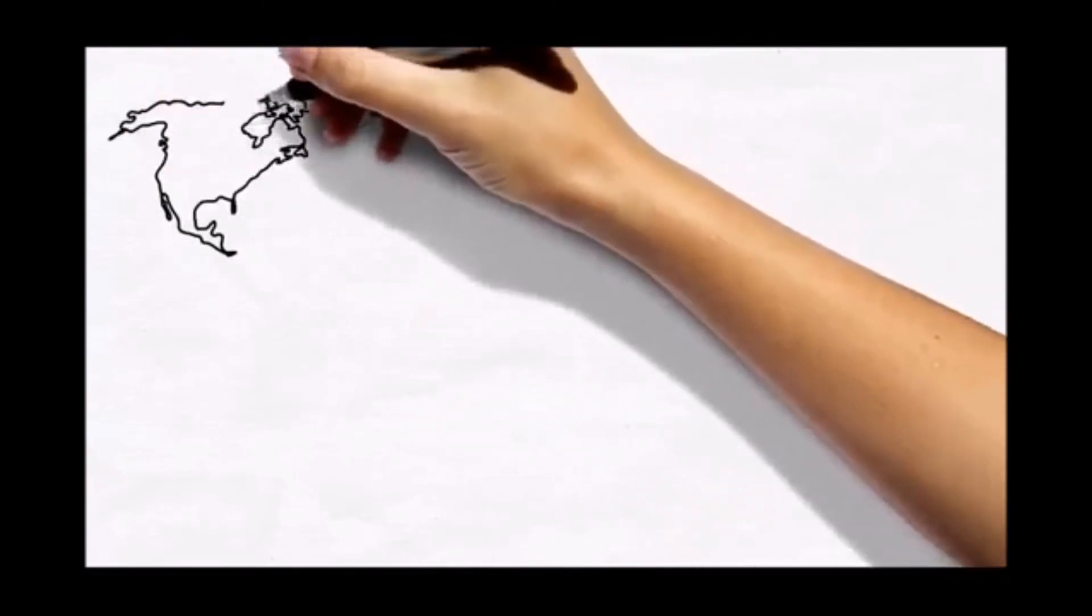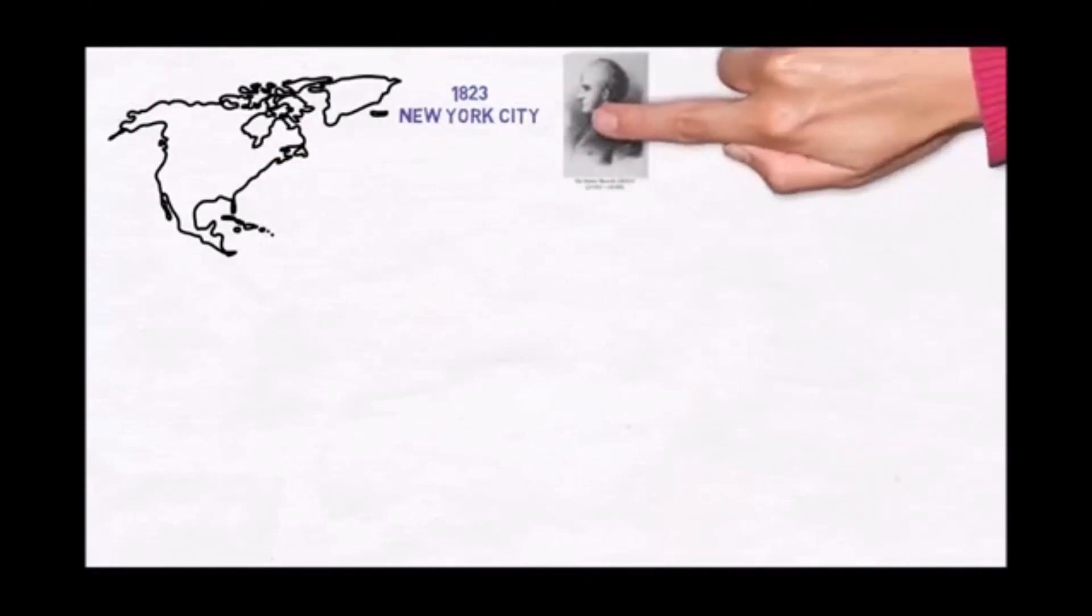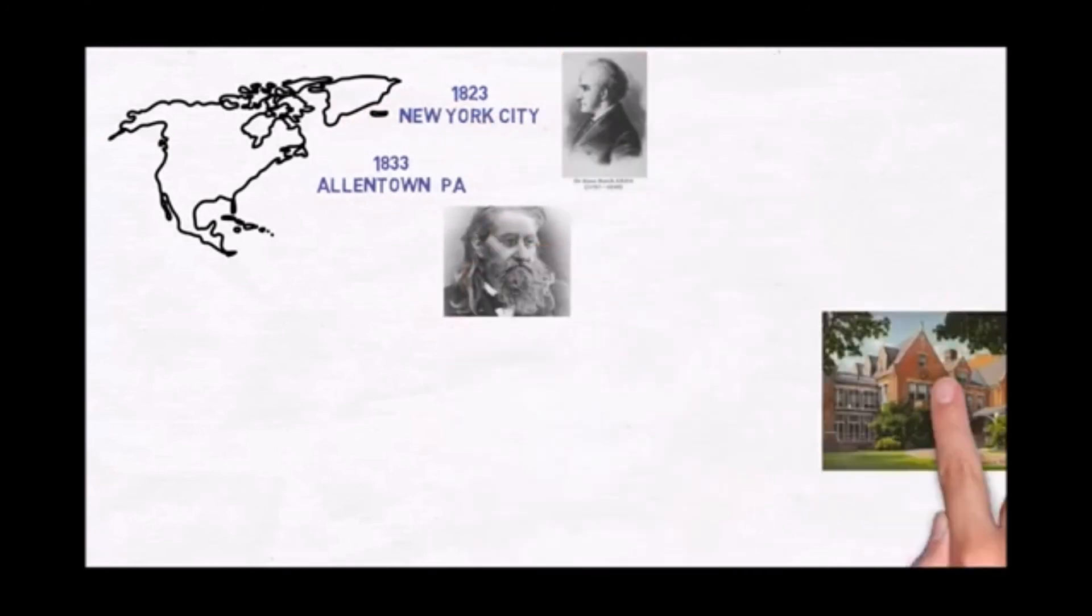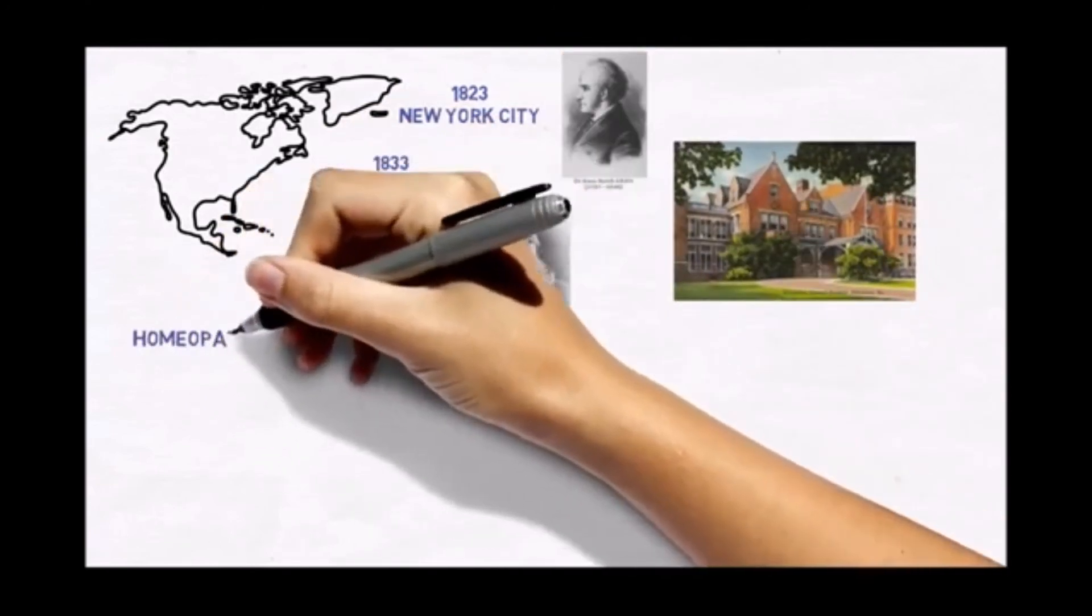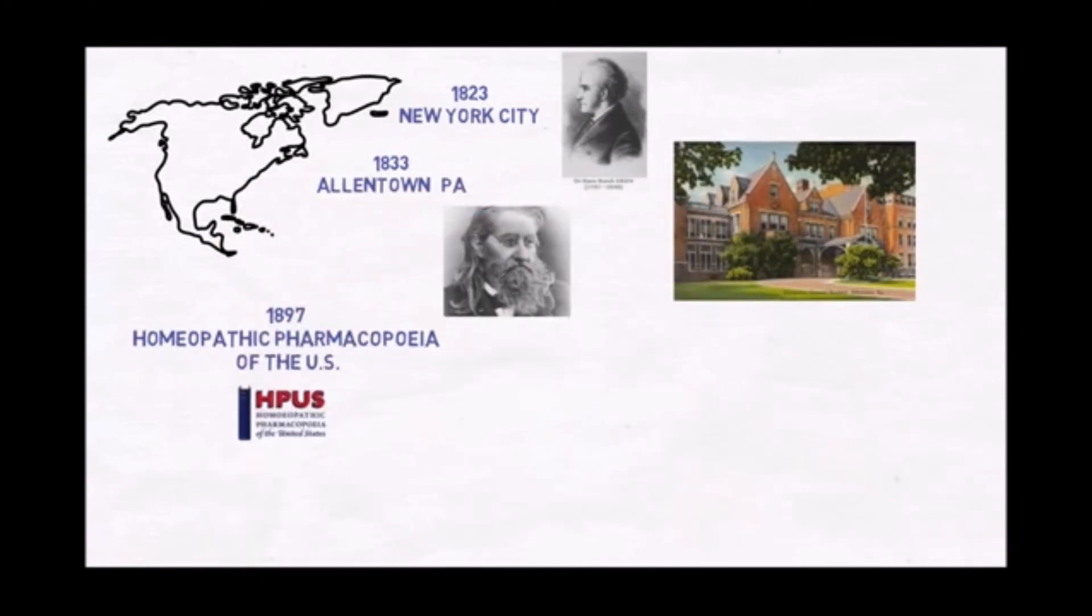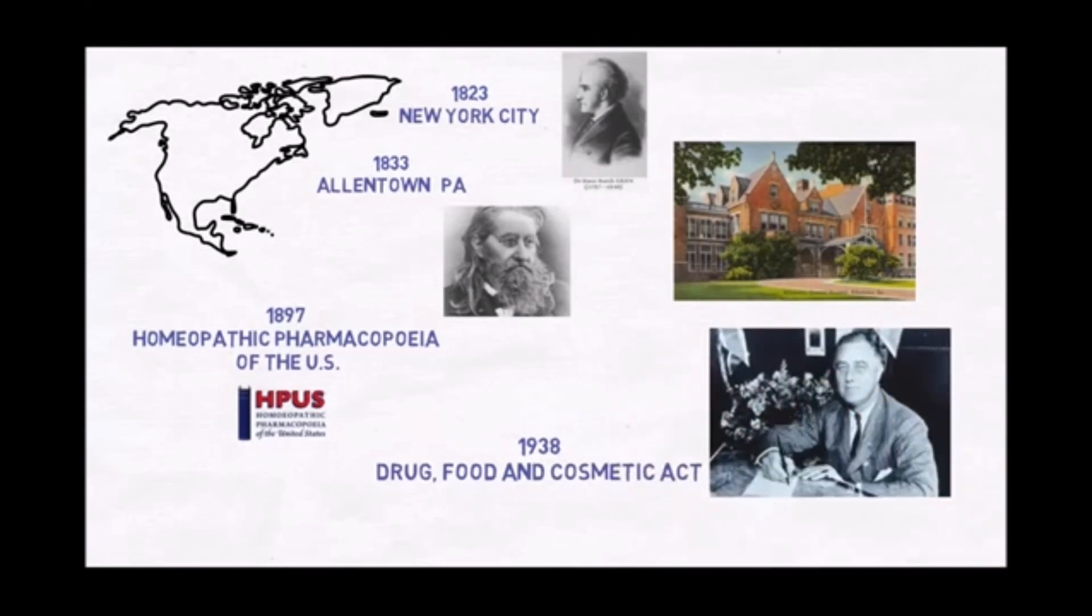In 1823, Dr. Graham was the first to practice homeopathy in the United States. Ten years later, Dr. Herring founded the first homeopathic hospital. The homeopathic pharmacopoeia was created in 1897, and in 1938, President Franklin Roosevelt signed the act that defined homeopathic medicines as drugs.